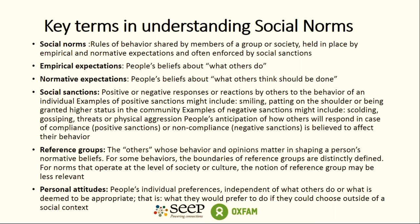Before we go into that, it's useful to share some key terms in understanding social norms. Social norms are rules of behavior shared by members of a group or society, held in place by empirical and normative expectations and often endorsed by social sanctions. Empirical expectations are people's beliefs about what others do, and normative expectations are people's beliefs about what others think should be done. Social sanctions can be positive or negative responses or reactions by others to the behavior of an individual.